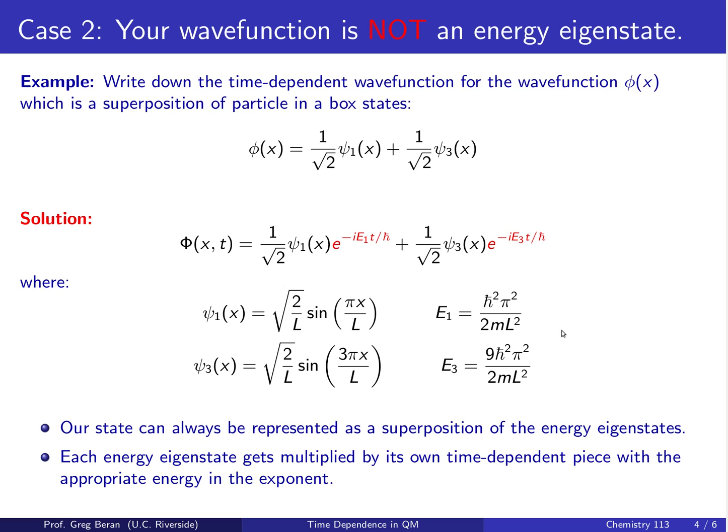And if you wanted, you could go ahead and plug in all these different formulas for ψ₁, E₁, ψ₃, and E₃ to get the full mathematical expression. But the basic idea is we just take each one of the energy eigenstates in this superposition, and each one gets its own time-dependent piece with its own corresponding energy in the exponent.